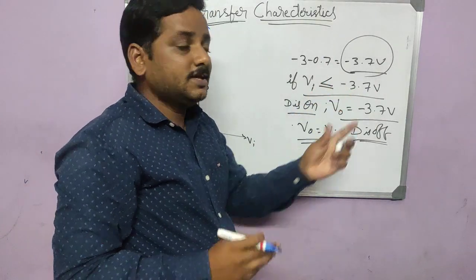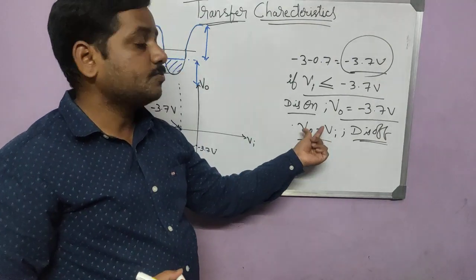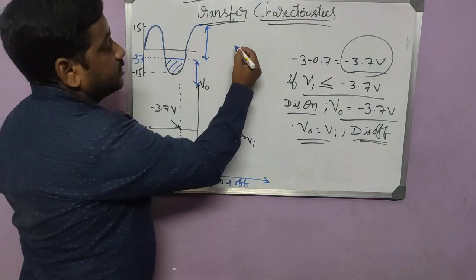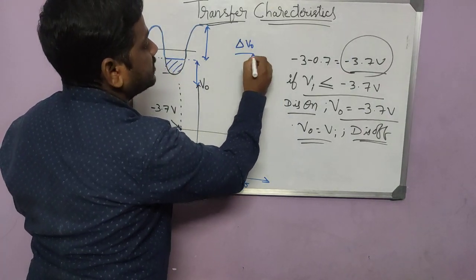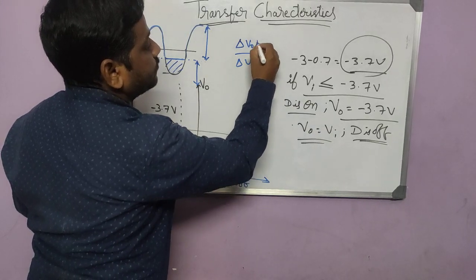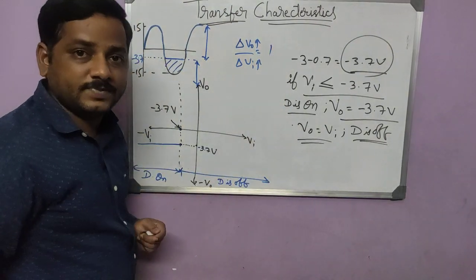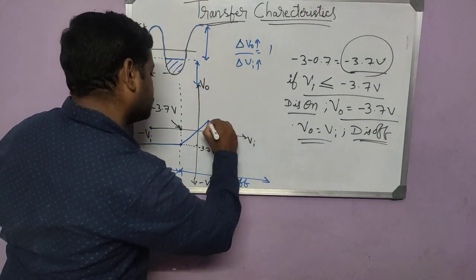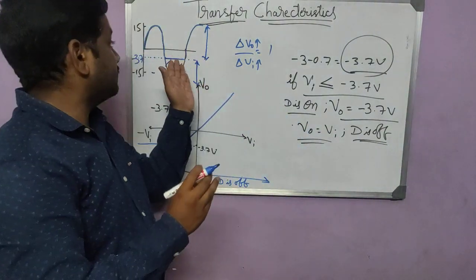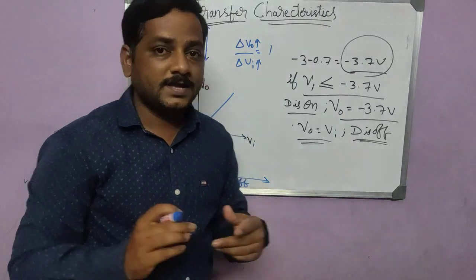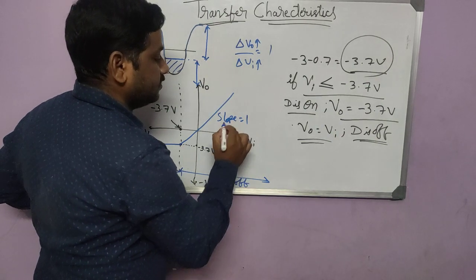Once V_in increases beyond minus 3.7, the diode is OFF and output follows the input. The slope here is change in output divided by change in input, which equals 1. So from the changeover point, we plot a line with slope 1 going up to the right. The transfer characteristic thus shows a horizontal segment and a slope-1 segment.